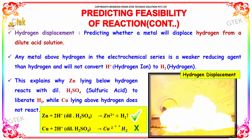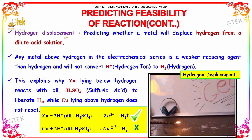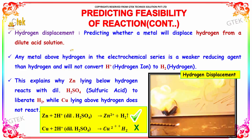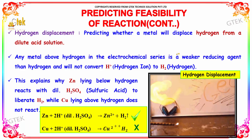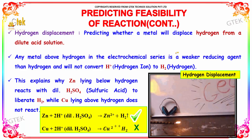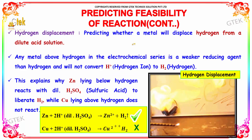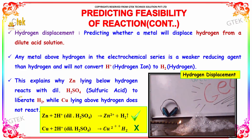Regarding hydrogen displacement, this indicates whether a metal will displace hydrogen from a dilute acid solution. Any metal above hydrogen in the electrochemical series is a weaker reducing agent than hydrogen and will not convert H⁺ to H₂. This explains why zinc, lying below hydrogen, reacts with dilute H₂SO₄ to liberate H₂, while copper, lying above hydrogen, does not react.